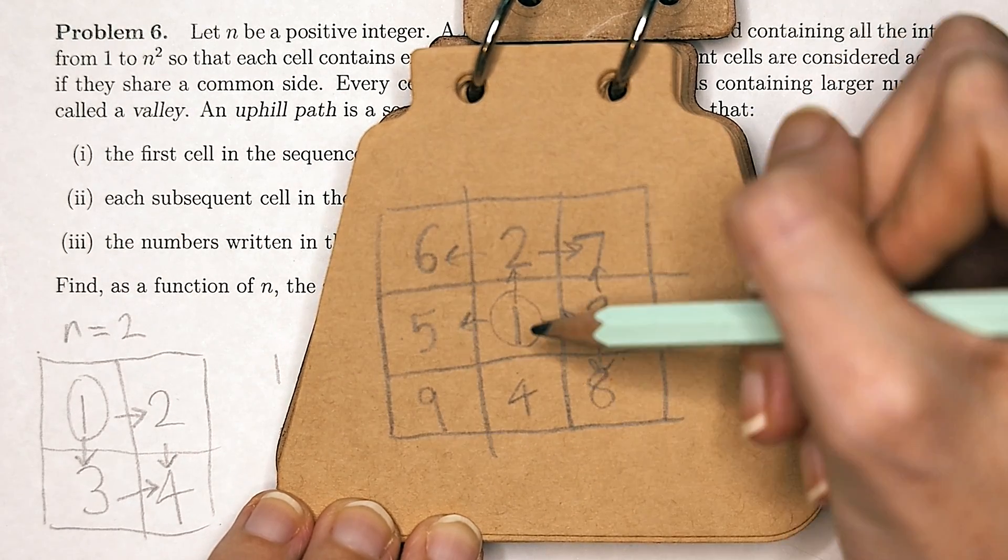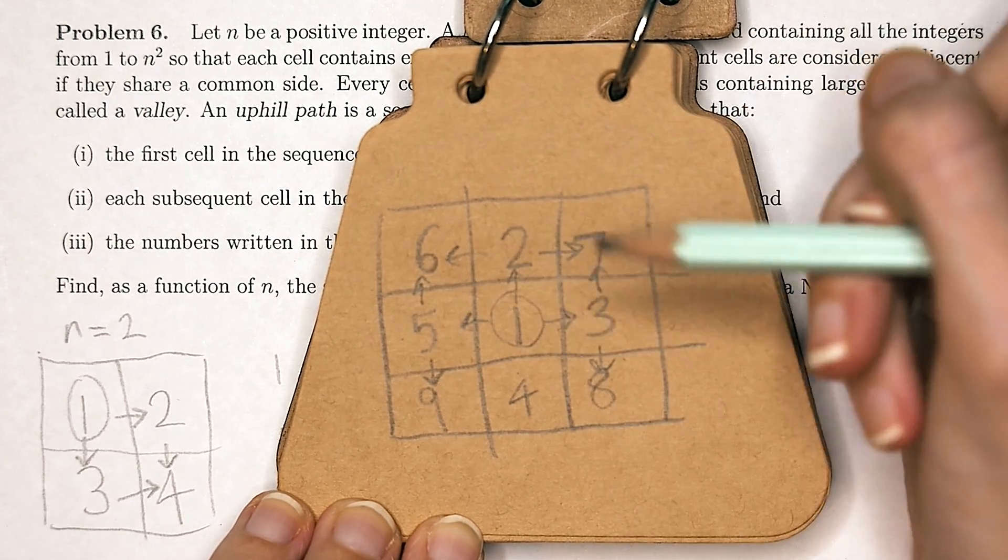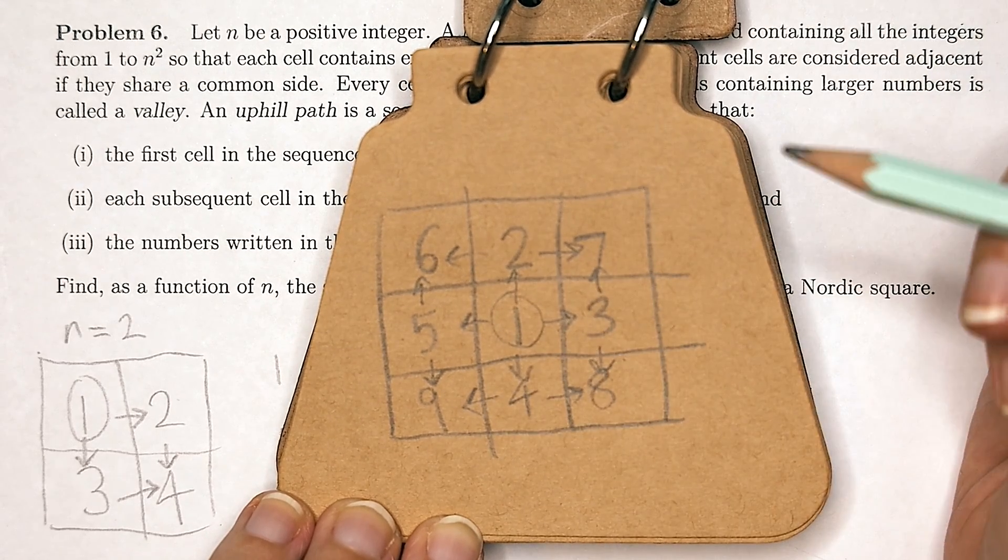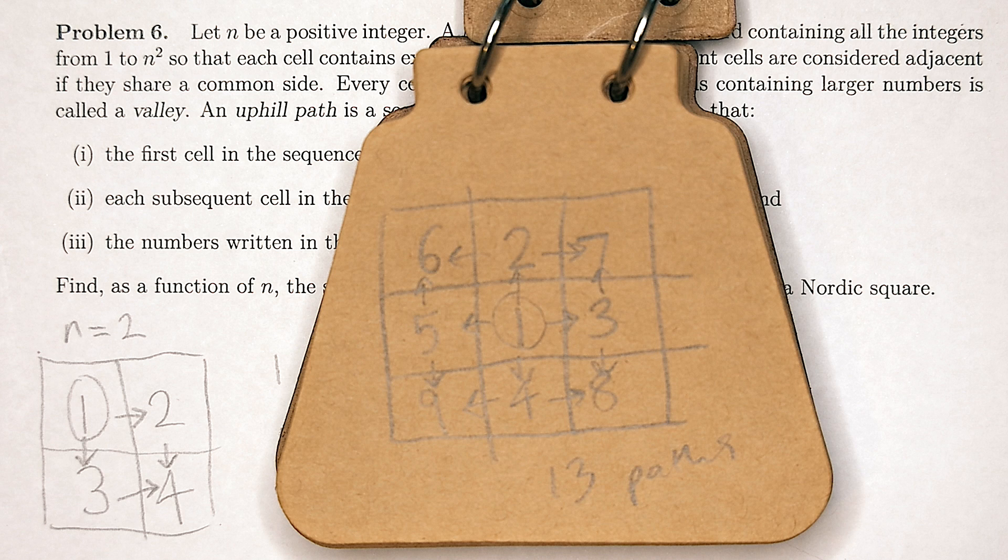1 5, 1 5 9, 1 5 6, 1 4, 1 4 8, 1 4 9, giving a total of 13 paths.